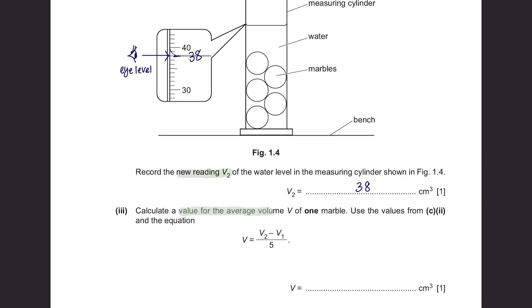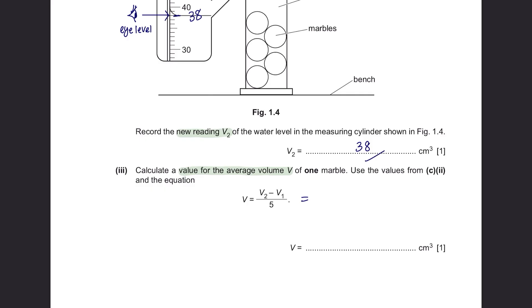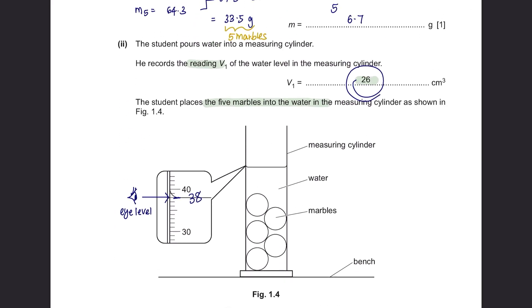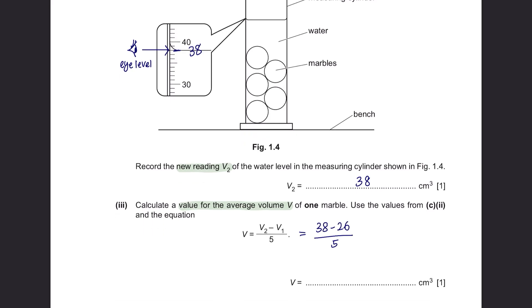Part 3. Calculate a value for the average volume V of one marble. Use the values from C part 2 and the equation. So, let's just substitute our values in. The value of V2 is 38 and the value of V1 is 26. This will give us a value of 2.4. Remember, your answers should remain in two significant figures as these are also in two significant figures.